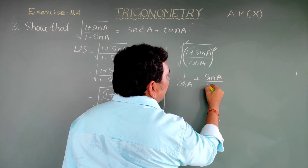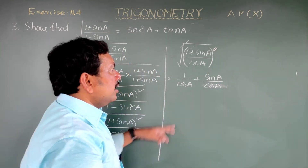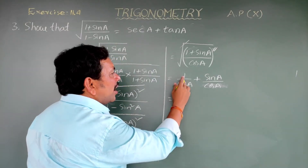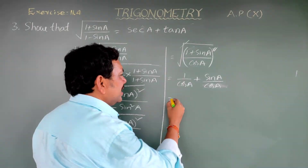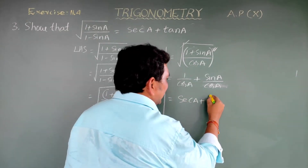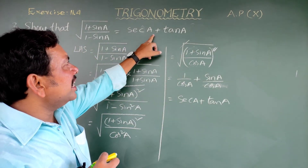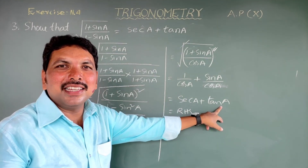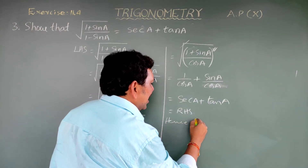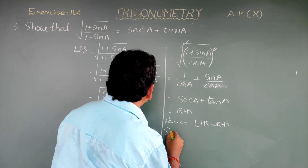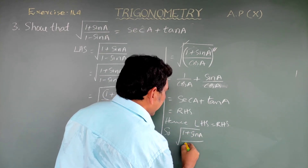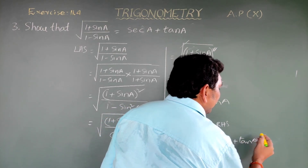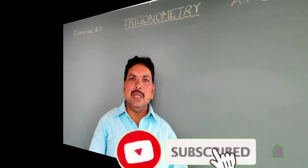We can write (1 + sin A)/cos A as 1/cos A plus sin A/cos A. Now, 1/cos A is sec A, and sin A/cos A is tan A. So we get sec A plus tan A, which is the RHS. Hence LHS equals RHS: root of (1 + sin A)/(1 - sin A) equals sec A plus tan A.